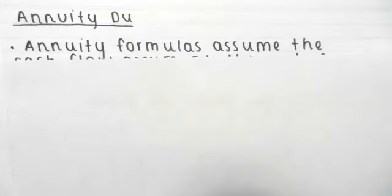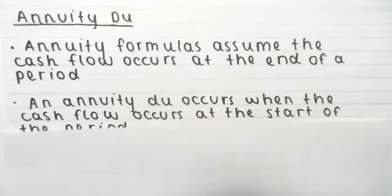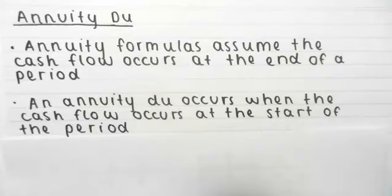An important thing to remember with the annuity formula is that it assumes the cash flow occurs at the end of each period — so the first cash flow is at the end of year one, the next at the end of year two, and so on. An annuity due is when the cash flow occurs at the start of each period rather than the end.